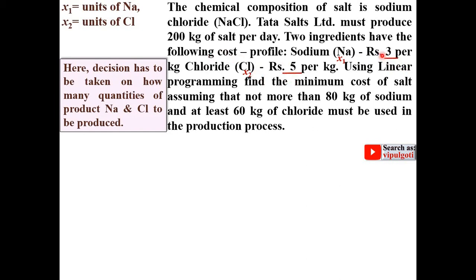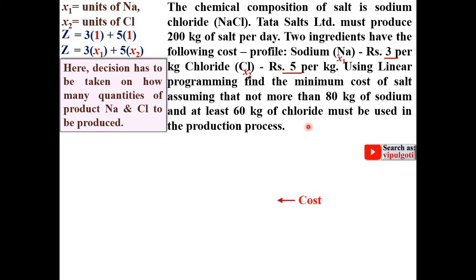The cost is given as 3 rupees per kg of sodium and 5 rupees per kg of chloride. If I produce x1 quantity of sodium and x2 quantity of chloride, the total cost is 3x1 plus 5x2. Since it is a cost minimization, the objective function will be: minimize Z = 3x1 + 5x2.